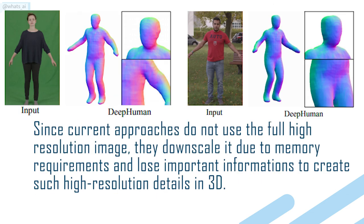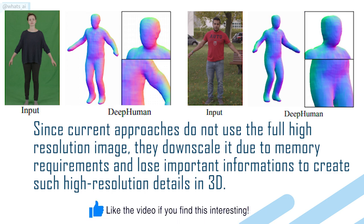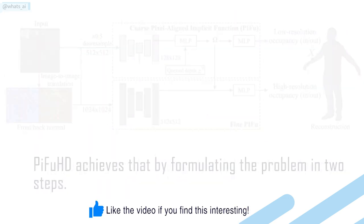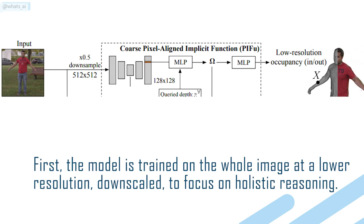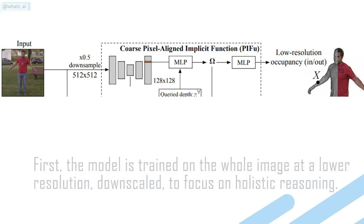Since current approaches do not use the fully high-resolution image — they downscale it due to memory requirements — they lose important information needed to create high-resolution details in 3D. PIFuHD achieves that by formulating the problem in two steps. First, the model is trained on the whole image at a lower resolution, downscaled, to focus on holistic reasoning.